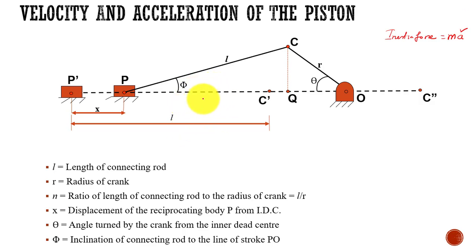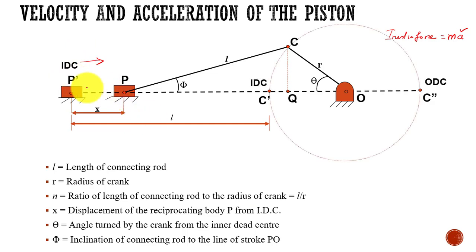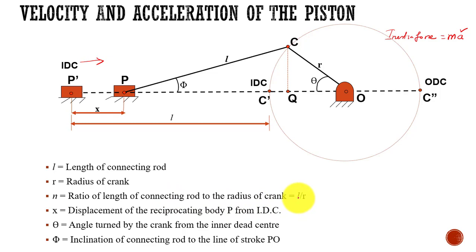This is a slider-crank mechanism. Initially the piston is at position P-dash, where the theta value is 0 and phi value is also 0. The piston starts at P-dash and moves along the stroke; the distance it has covered from P-dash to P is X, which is the displacement of the reciprocating body from IDC (inner dead center). L represents the length of the connecting rod, R represents the radius of the crank, and N is the ratio L divided by R.